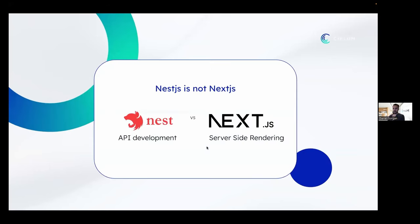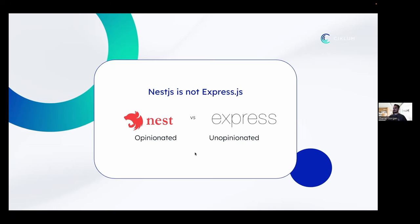Some clarifications: Nest is not Next. Next is used more for server-side rendering with React, while Nest is used for developing more complex APIs with different framework integrations. They have the same general purpose but the main difference is that one is opinionated and the other is unopinionated. Express, for example, doesn't force you to write your code in any way — it gives you freedom. Nest comes with an opinionated structure, forcing you to implement its modular architecture.